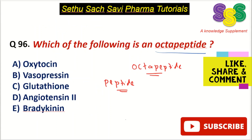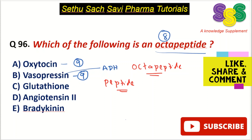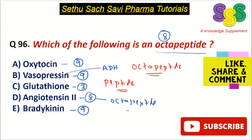Coming back to our question: which of the following is an octapeptide? Octa means the number of amino acids is eight. Oxytocin contains nine amino acids, vasopressin contains nine amino acids (also called antidiuretic hormone, ADH), glutathione is a tripeptide with three amino acids, bradykinin is made up of nine amino acids, and angiotensin 2 is made up of eight amino acids — therefore it is an example of an octapeptide. The correct answer is choice D, angiotensin 2.